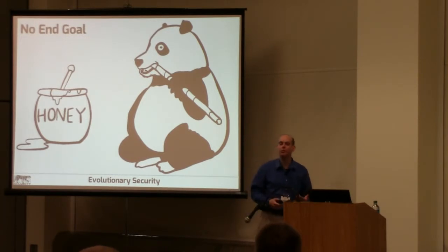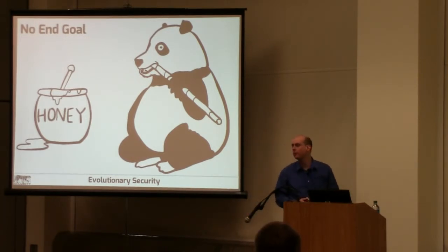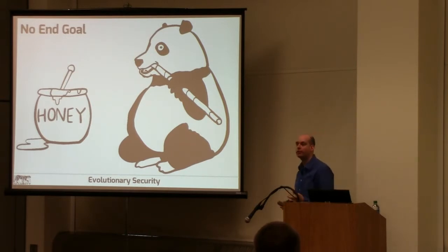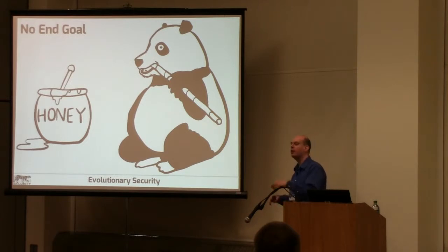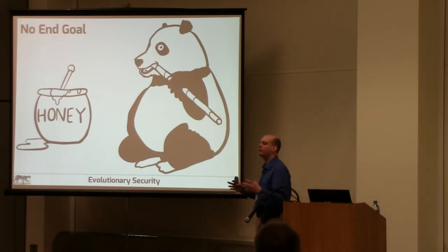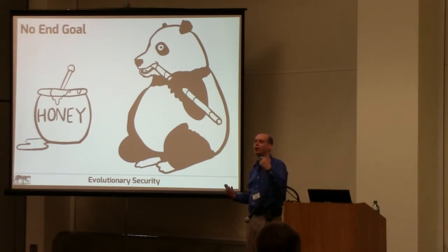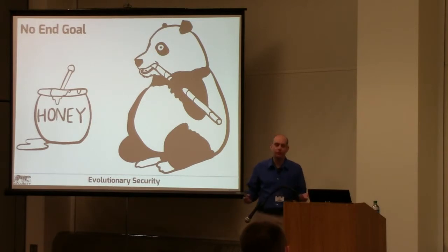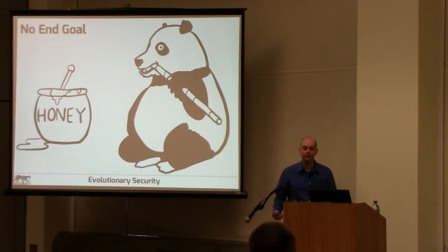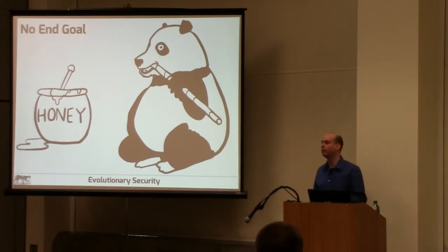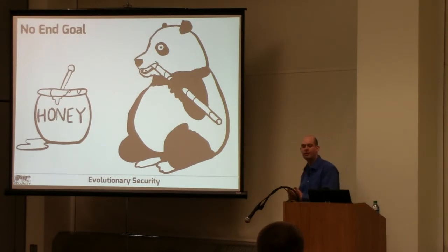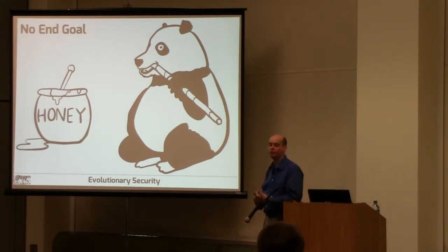Bees became successful by depending on humans, and that has eventually turned on them — pesticides and other factors. The same thing happens with partnerships in business. You can grow together with another business as long as you're going in the same direction, but if environmental factors change and that business can do better without moving with you, they'll do it. That's how business works — it's a state of nature, constant warfare for resources.